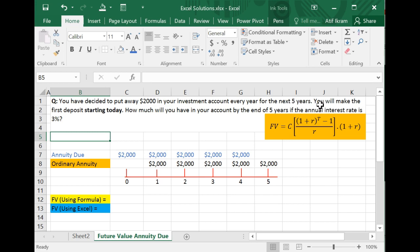Now here's the interesting part. You will make the first deposit starting today, so when the year is starting. So this is what is making this an annuity due. This is an annuity due. Why? Because the first cash flow is going to be deposited today.